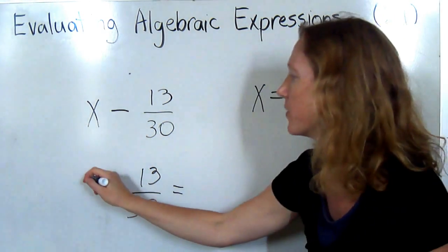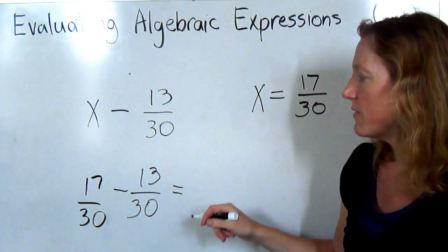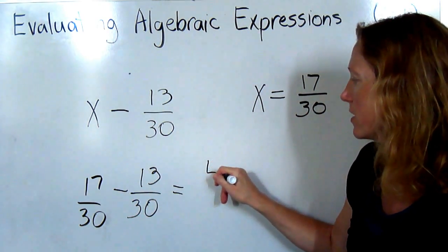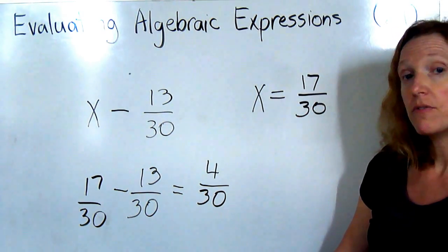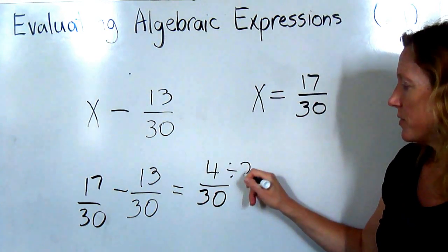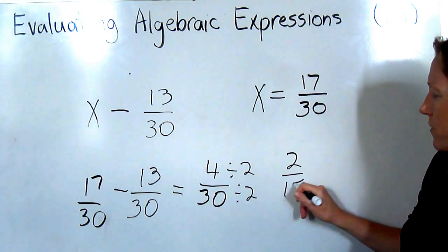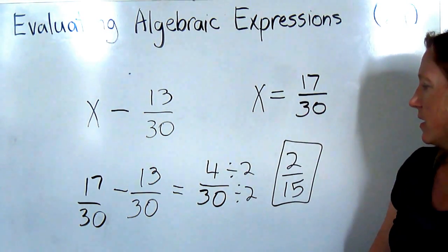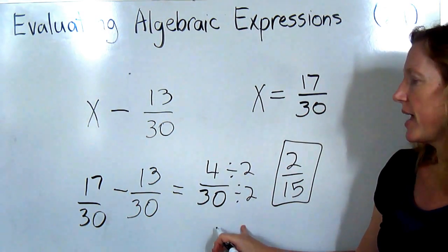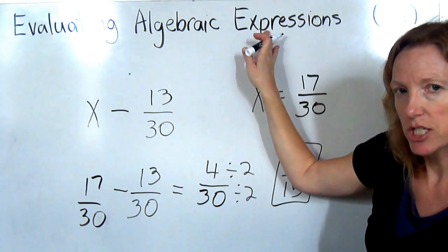Okay, 17 over 30, and now you're subtracting. 17 minus 13 is 4 over 30. Common factor of 2, so we'll divide the numerator and the denominator by 2. 4 divided by 2 is 2, and 30 divided by 2 is 15. 2 over 15 is my answer. And that is how we evaluate algebraic expressions.